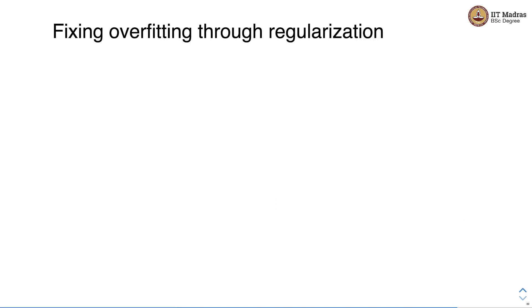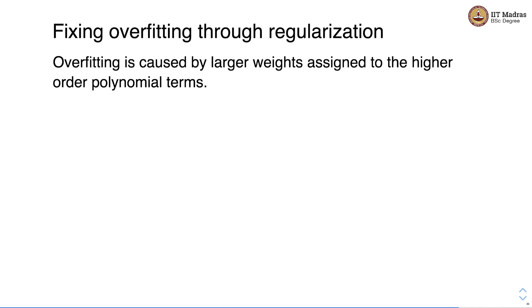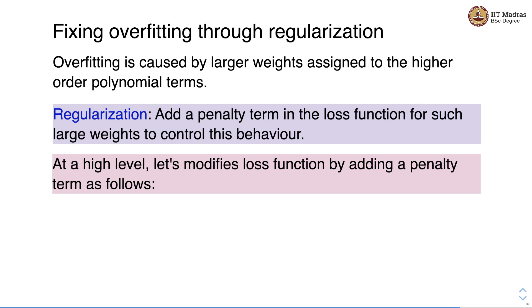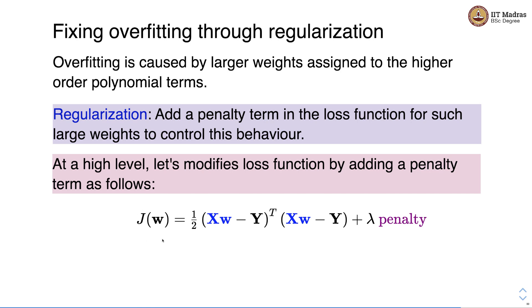The second way of controlling the overfitting problem is by using regularization. We discussed that overfitting is caused by larger weights assigned to the higher order polynomial terms. In regularization, we add a penalty term in the loss function. What you see on your screen is an equation for the modified loss function — it contains the loss term from the classical linear regression model, and we add a penalty term with a multiplier lambda which controls how much penalty is added to the loss function.